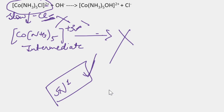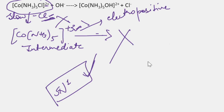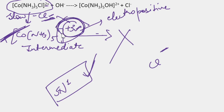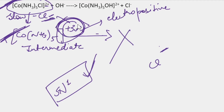If there is a +1 charge, SN1 will be observed. But for a +2 charge complex, the SN1 mechanism will not proceed because after Cl⁻ leaves, the charge becomes +3, which is more electropositive. Since the chlorine is negative and the complex becomes more positive, they attract each other, so chloride cannot leave. This is why the SN1 mechanism cannot be shown through base hydrolysis for higher-charge complexes. Base hydrolysis shows SN2 and SN1CB mechanisms.